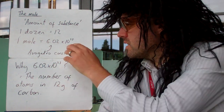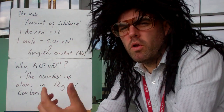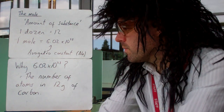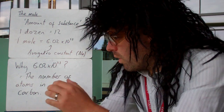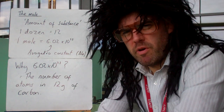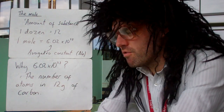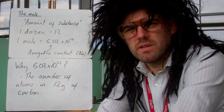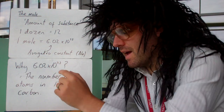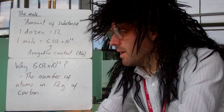That's the number of atoms in a mole, or molecules in a mole, or ions in a mole — it can be anything. Why do we have this number in particular? Well, from experiment, we've worked out that that's the number of atoms in 12 grams of carbon exactly. So in 12 grams of carbon, you have that number of atoms, and everything else is compared to that.